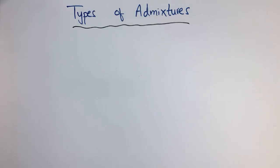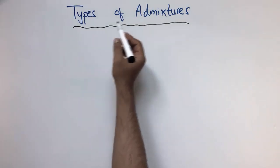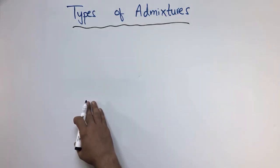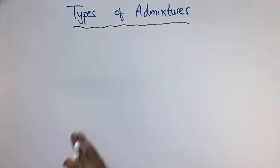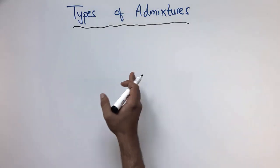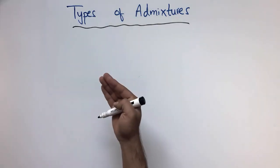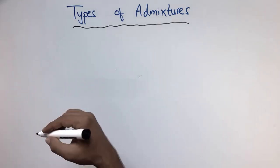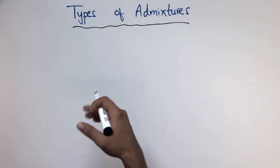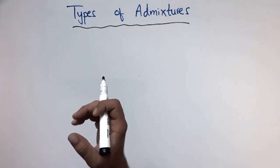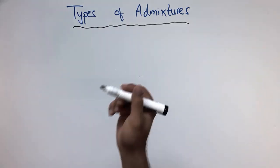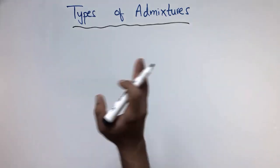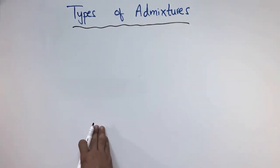Hello guys, welcome back to the Seven Engineering YouTube channel. Please subscribe our channel for daily Seven Engineering videos. Today our lecture is about the types of admixtures. In this lecture I'm going to define and explain the different types of admixtures and the purpose of each type. Admixtures are constituents which we use in concrete — sometimes to increase the strength, sometimes to increase the workability, sometimes to avoid the freezing and thawing action, and to increase or reduce the hydration process.